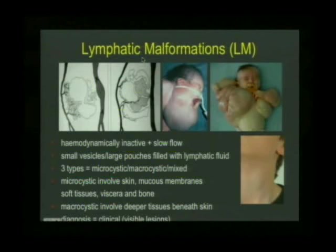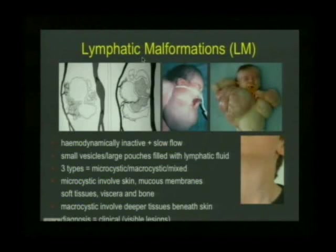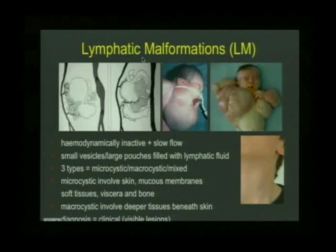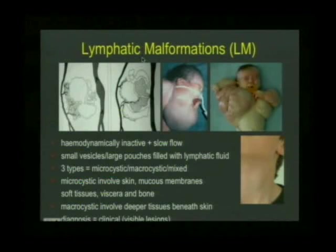Microcystic disease generally involves the skin, mucous membranes, soft tissues, viscera, and bone, while macrocystic disease often involves deeper tissues. These are clinical examples of children with what we used to describe as cystic hygroma or lymphangioma. That is old terminology — calling these lymphangiomas implies they are tumors, which they are not; they are vascular malformations. We've moved away from using the terms cystic hygroma or lymphangioma.